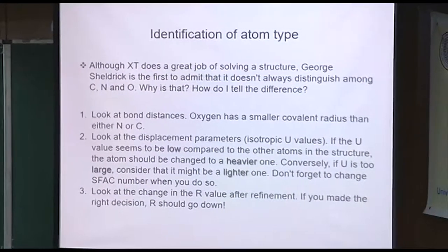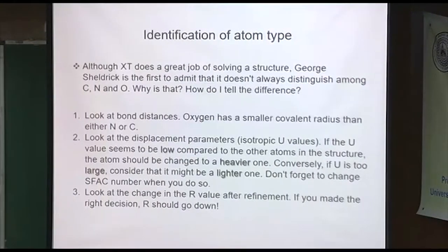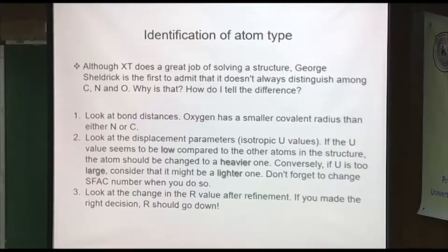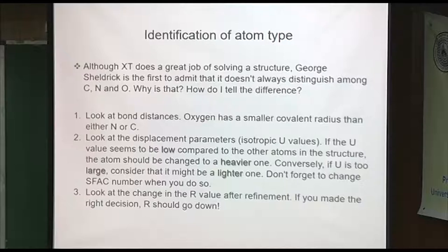How do you tell the difference between carbon, nitrogen, and oxygen? There are two main things: bond distances and thermal parameters. You should have a feeling for covalent radii — they're tabulated everywhere — and see if the distances are reasonable. Oxygen has a smaller covalent radius than carbon; they get smaller as you go from left to right across the row. Regarding displacement parameters: if the U value seems too low, then it might be a heavier atom; if the U value is too high, then it should be a lighter atom.